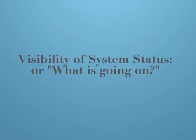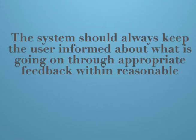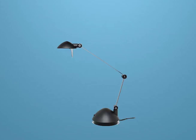Visibility of system status — or what is going on. This principle states that the system should always keep the user informed about what is going on through appropriate feedback within reasonable time.